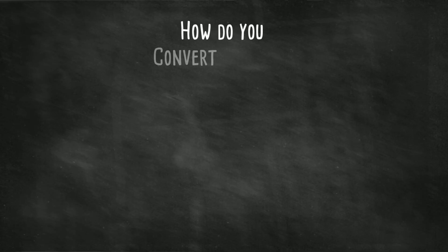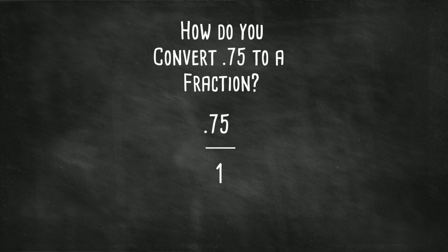How do you convert seventy-five hundredths to a fraction? Well, let's do this. Let's place seventy-five hundredths over one. We need to remove the decimal in the numerator. So let's multiply it by one hundred, which moves the decimal two places to the right.